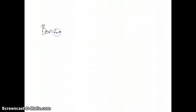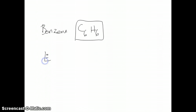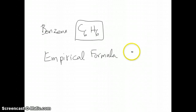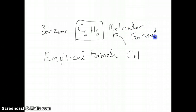The idea of empirical versus molecular formula is illustrated with the following example. In organic chemistry, we have a molecule known as benzene, which has the formula C6H6. This is the actual formula of benzene, with six carbons and six hydrogens bonded together. When you determine this through combustion analysis, you find the empirical formula can be reduced — since both subscripts are six, you divide by six — giving an empirical formula of CH. But the actual molecular formula is C6H6. That's the difference between empirical and molecular formula.